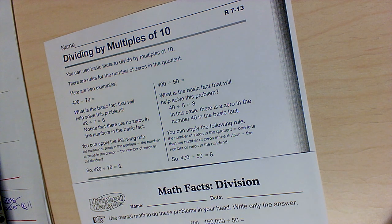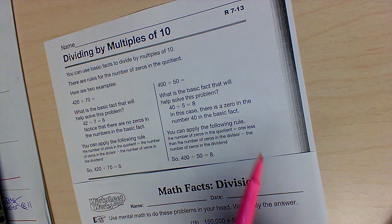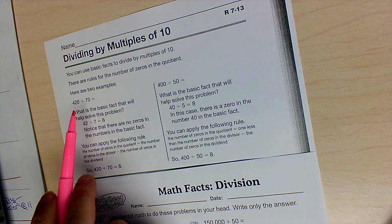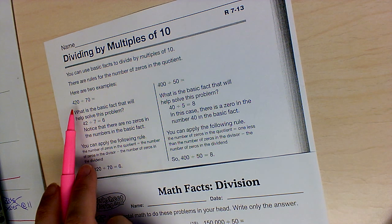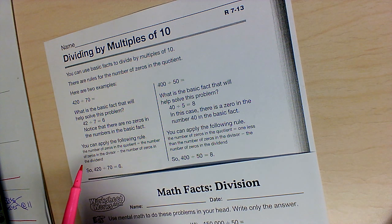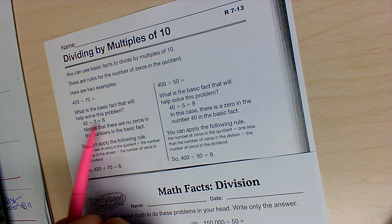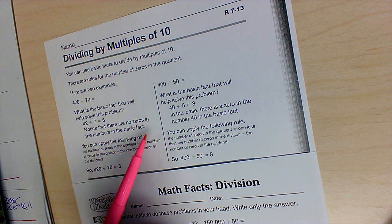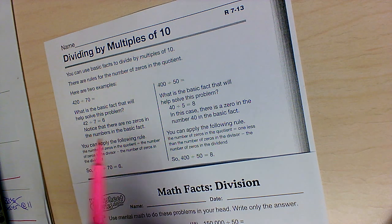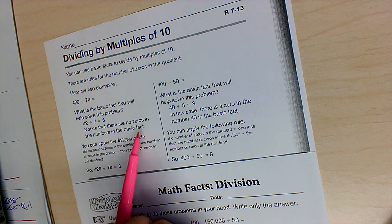Dividing by multiples of 10. This paper gives you some directions. So 420 divided by 70. I know that looks like a big number, but if you break it down, your fact family 42 divided by 7 equals 6. There's no zeros because we broke it down to our basic facts.